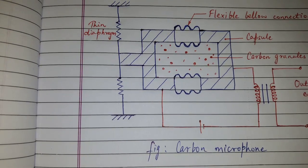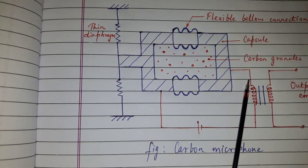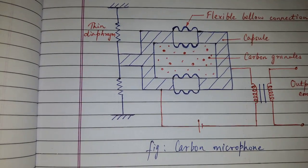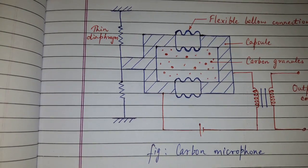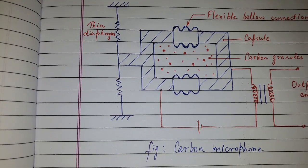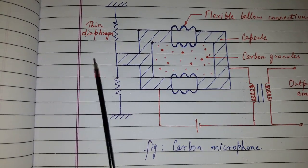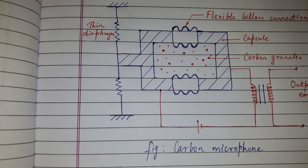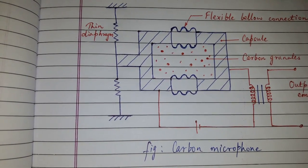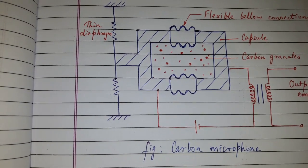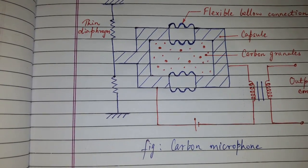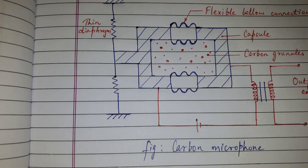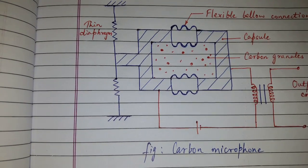Changing the resulting current, thus the output of the circuit is a function of sound pressure. It is most commonly used in telephones. The advantage of carbon microphone is it is inexpensive and it can withstand rough handling.